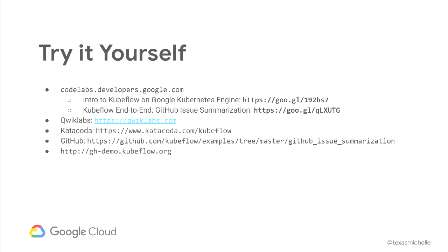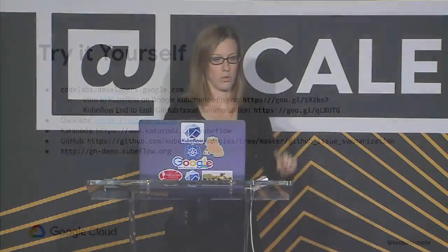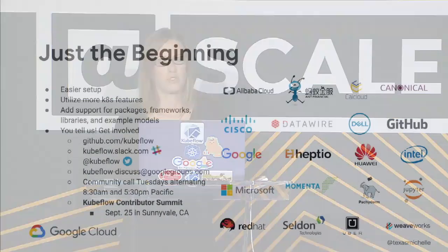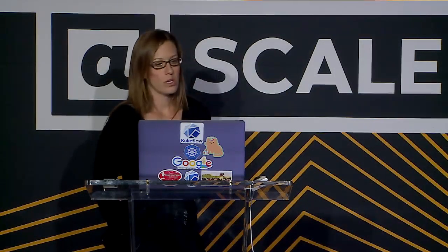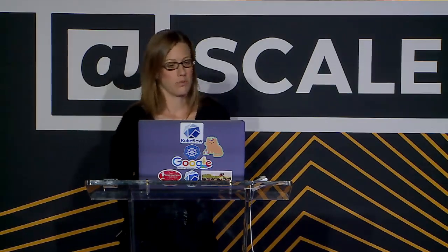If you want to try it yourself, visit codelabs.developers.google.com for self-guided walkthroughs, or Quick Labs — DM me on Twitter for codes. Katacoda is another option. There's a bunch of markdown in the GitHub examples repo you can run through on your own. We also publicly host a demo at gh-demo. This project was started at Google but there are a lot of other companies involved. It's not just open source — it's open contributions, largely driven by the community. Please join the Slack channel or our community meetings.